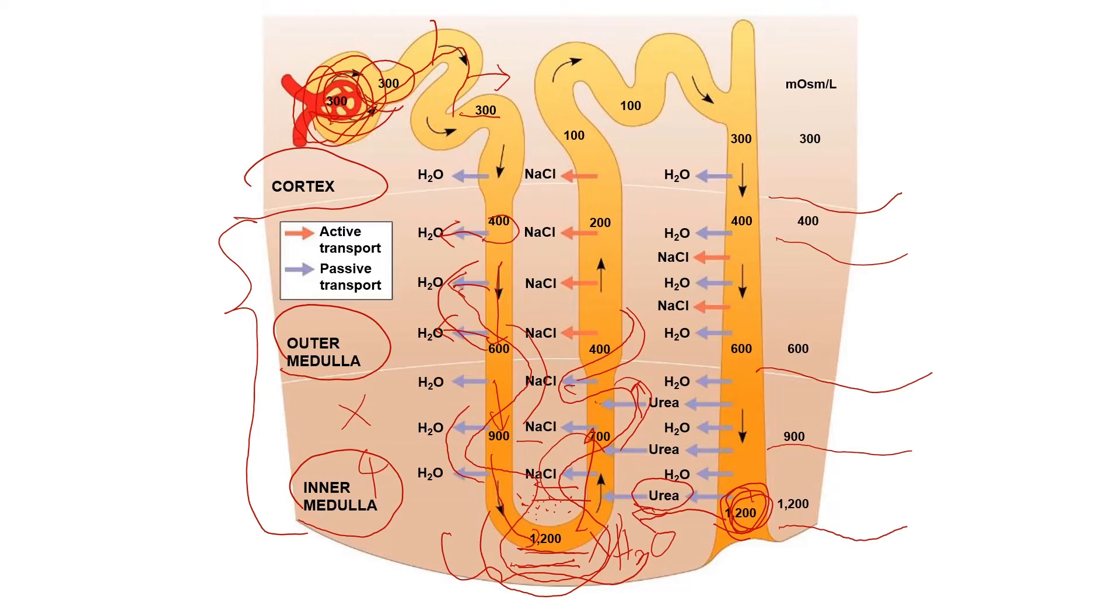These fluxes are reversed as blood flows back toward the cortex in the ascending vessel, with water re-entering the blood and salt diffusing out. Thus, the vasa recta can supply the kidney with nutrients and other important substances carried by the blood without interfering with the osmolarity gradient in the inner and outer medulla.